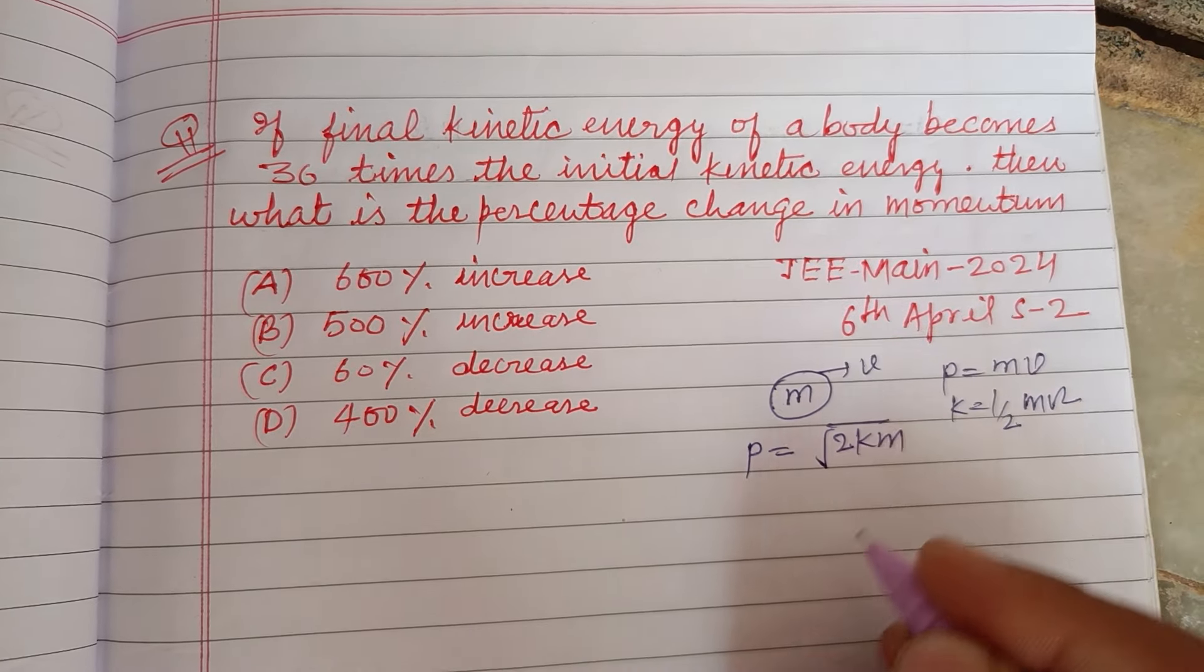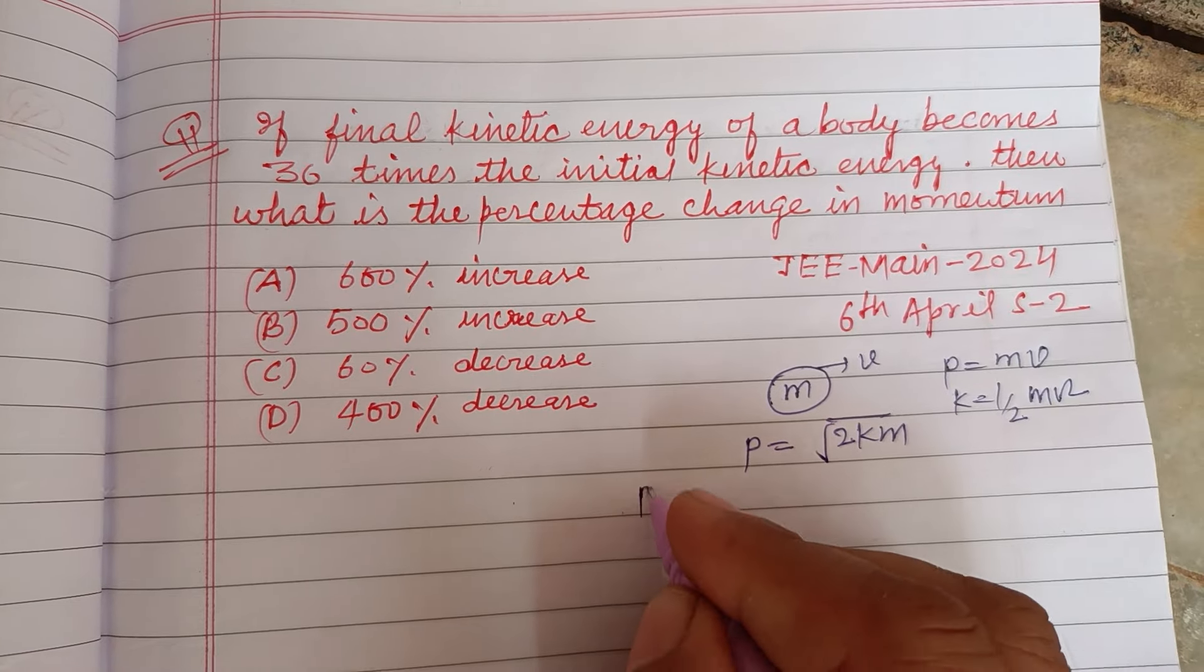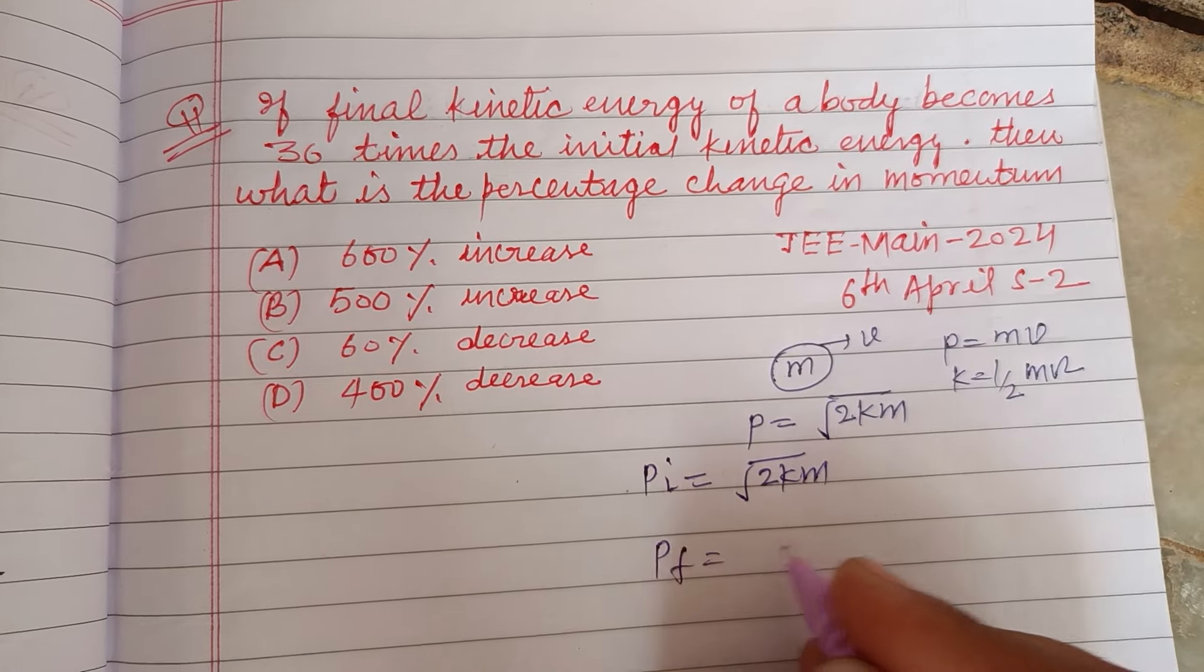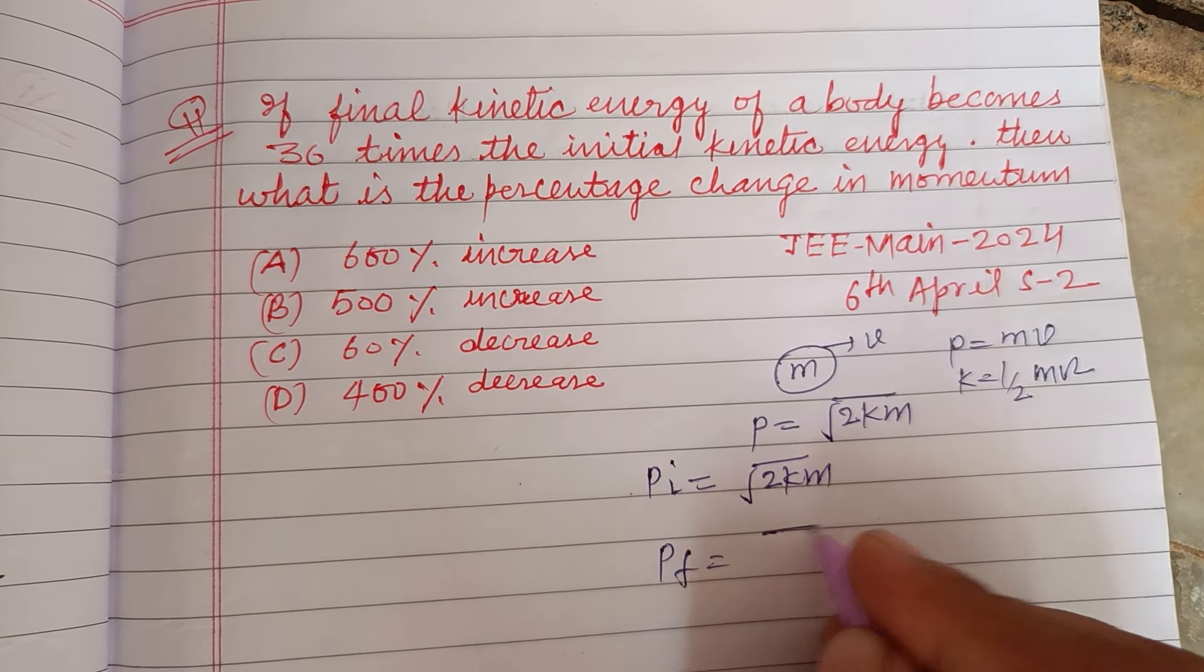So P initial is given to us as square root of 2km, and P final is given to us as square root of 2 into kinetic energy is 36 times, so 36km.